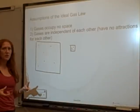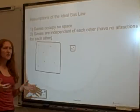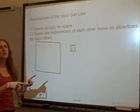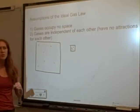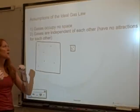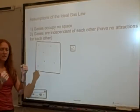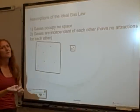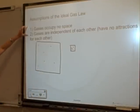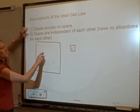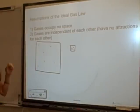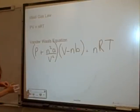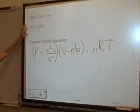We know assumption two isn't true. If gases had zero attraction for each other, water vapor molecules would never become attracted enough to turn into a liquid — something that was a gas would always stay a gas. But if you slow down gas particles enough, they attract, stick together, and turn into liquids. So the ideal gas law ignores particle volume and ignores intermolecular attractions.